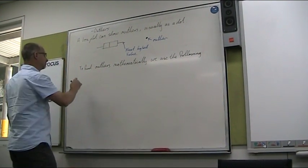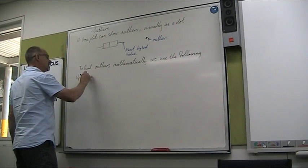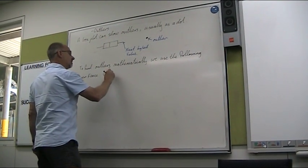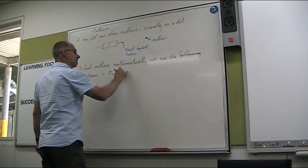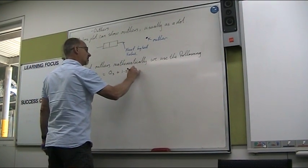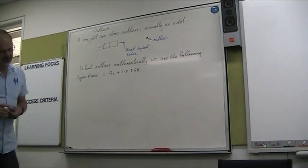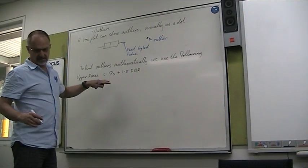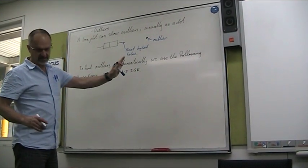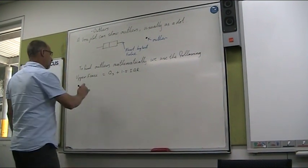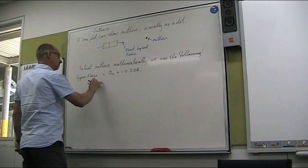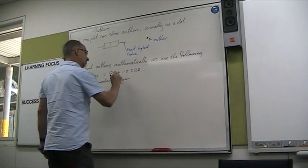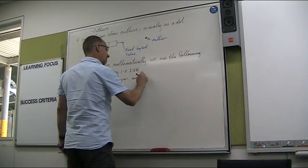We use what's known as an upper fence. And the upper fence is the third quartile plus 1.5 times the interquartile range. And so the upper fence, what that tells us is that we need to look to see whether these numbers are bigger than that. So any numbers bigger are outliers.